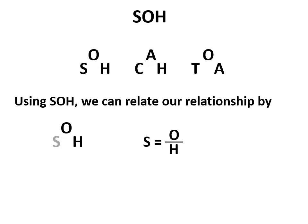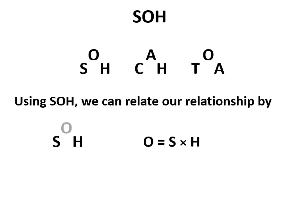Here's how it works. Taking the SOH relationship: the sine of the angle is O over H — sine of the angle is the opposite side divided by the hypotenuse. But we could equally rearrange it to find the hypotenuse: the hypotenuse is the opposite divided by sine. And for the third option, to calculate the opposite side: since S and H are side by side, opposite equals sine times the hypotenuse.